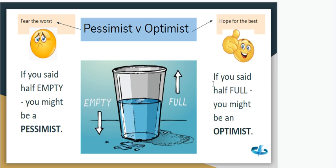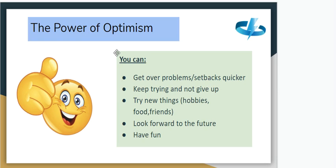Some of you might have described it as being half empty, some of you slightly differently. But if you said you thought the glass was half full, you might be called an optimist — someone that hopes for the best. If you thought it looked half empty and you were a bit disappointed, you might be seen as a pessimist, someone who tends to fear the worst or get worried about things.